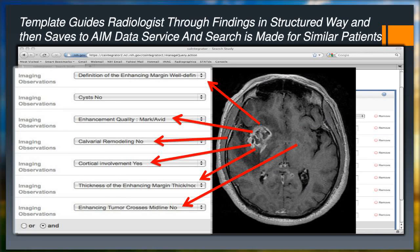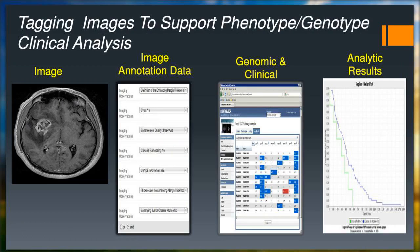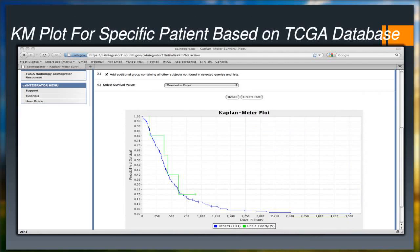What I really want is to personalize my observations. This is a workstation developed as part of work I helped fund at the National Cancer Institute, featuring a template for evaluating glioblastoma multiforme tumors. The template guides the radiologist through multiple questions and takes the data to cross-correlate with genomic, clinical, MR, and other data, allowing us to create a personalized Kaplan-Meier survival plot — specific to that patient's genomic data, medical imaging data, and clinical and lab data.